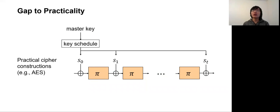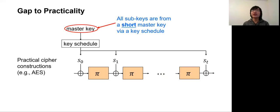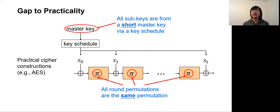However, the independence assumption is not necessarily realistic in practical cipher constructions. In particular, practical ciphers generate all subkeys from a short master key, and use a single permutation for every round instead of independent permutations. Currently, the KAC security without independence assumptions still remains not well understood, and there is a large gap between the theoretical study of KAC and practical cipher constructions.